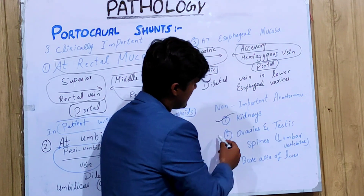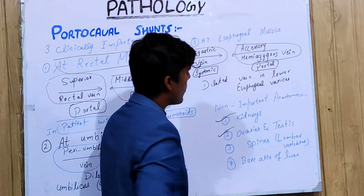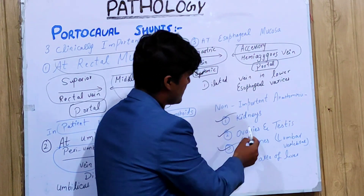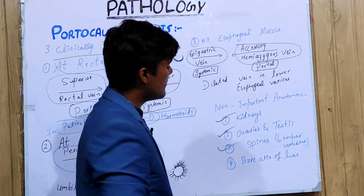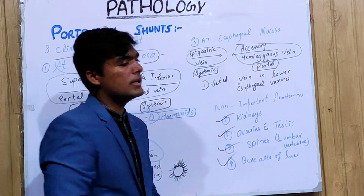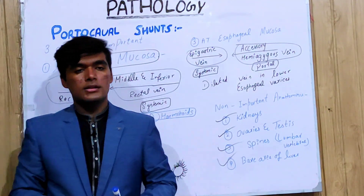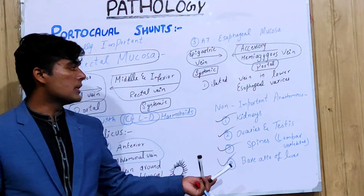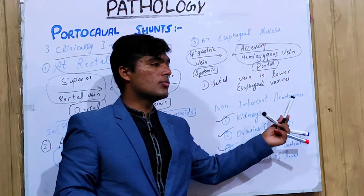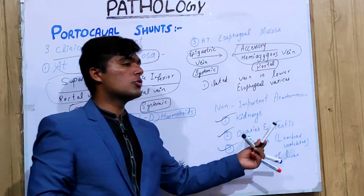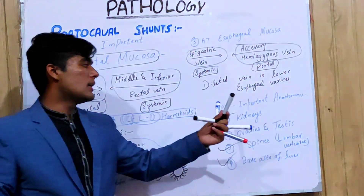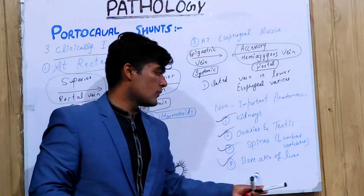Three to four non-clinically important anastomoses are also present: around the kidneys, around the ovaries and testes, at the spines of the lumbar vertebrae, and at the bare area of the liver. These are non-clinical anastomoses that are developed in the body due to this shunt.